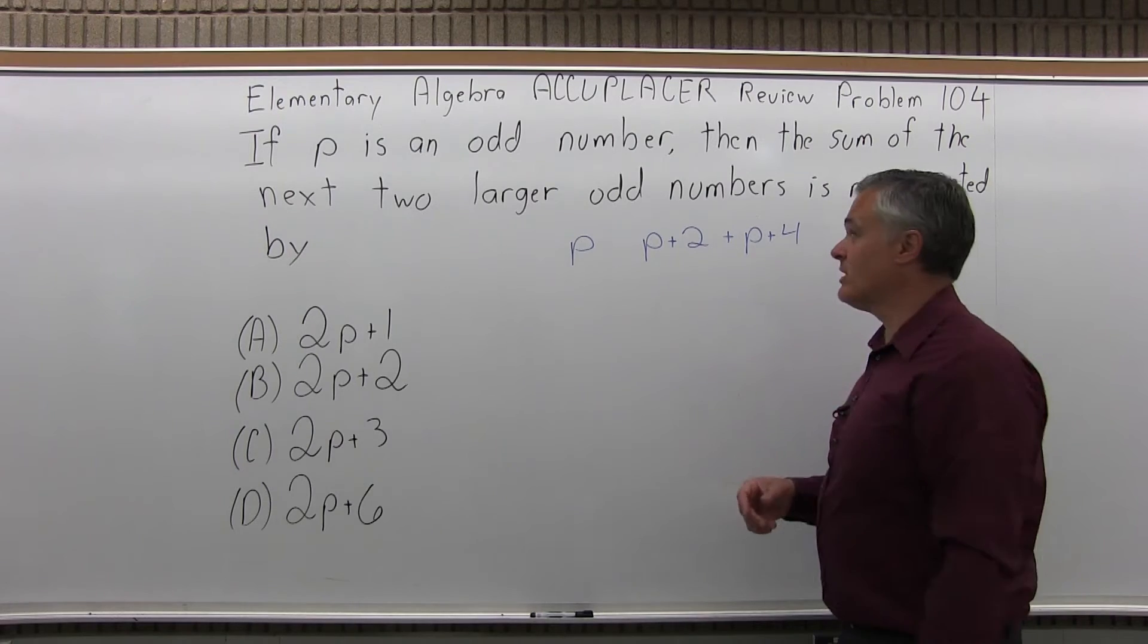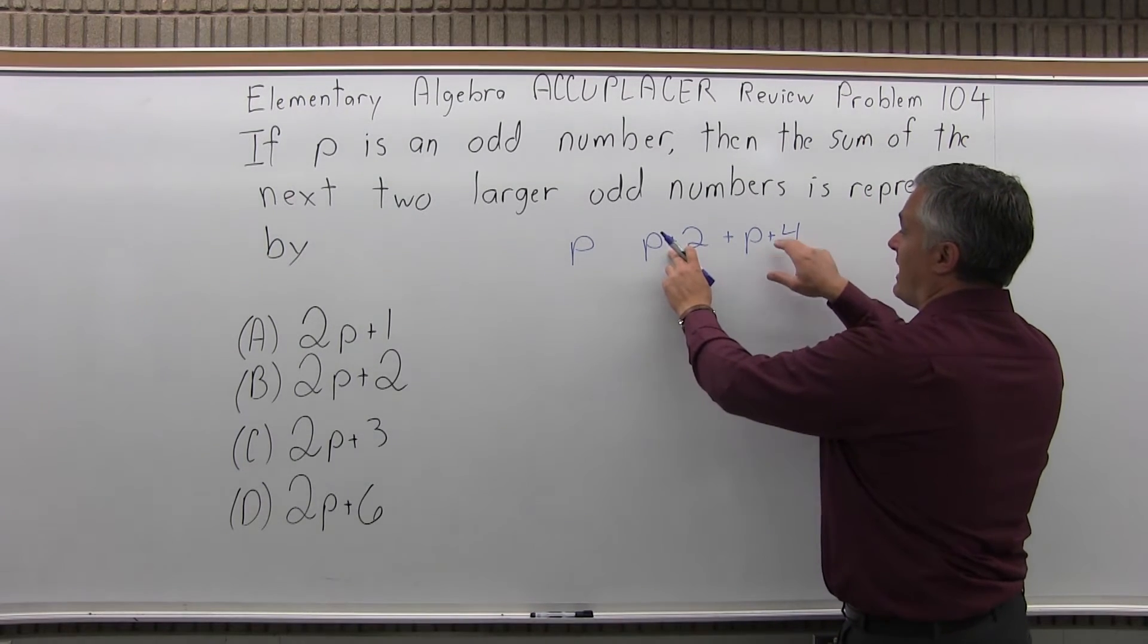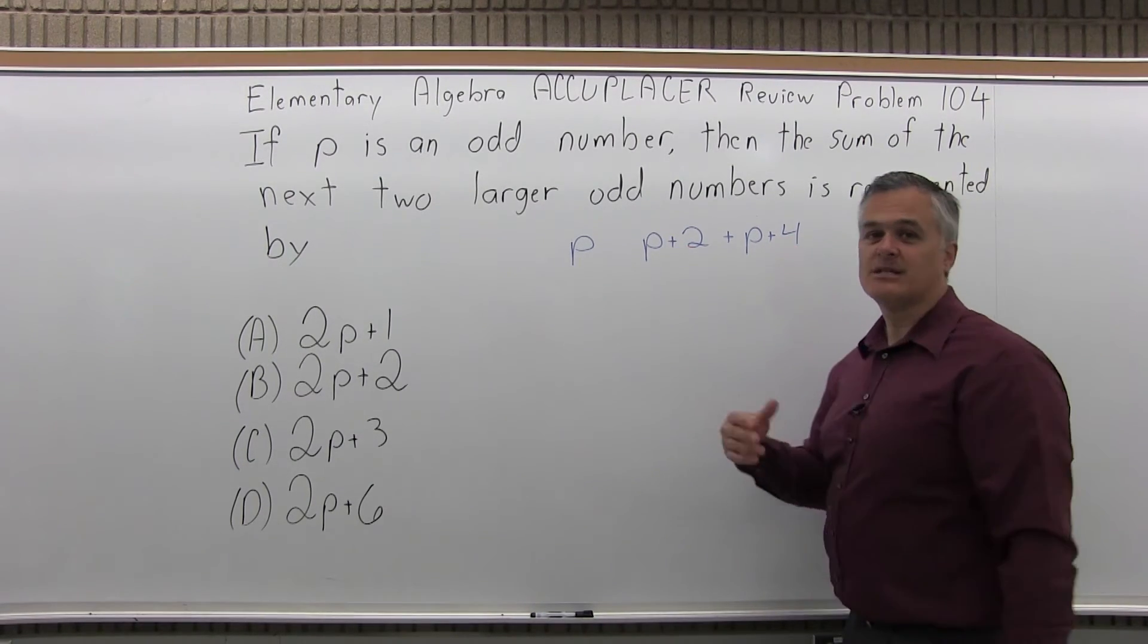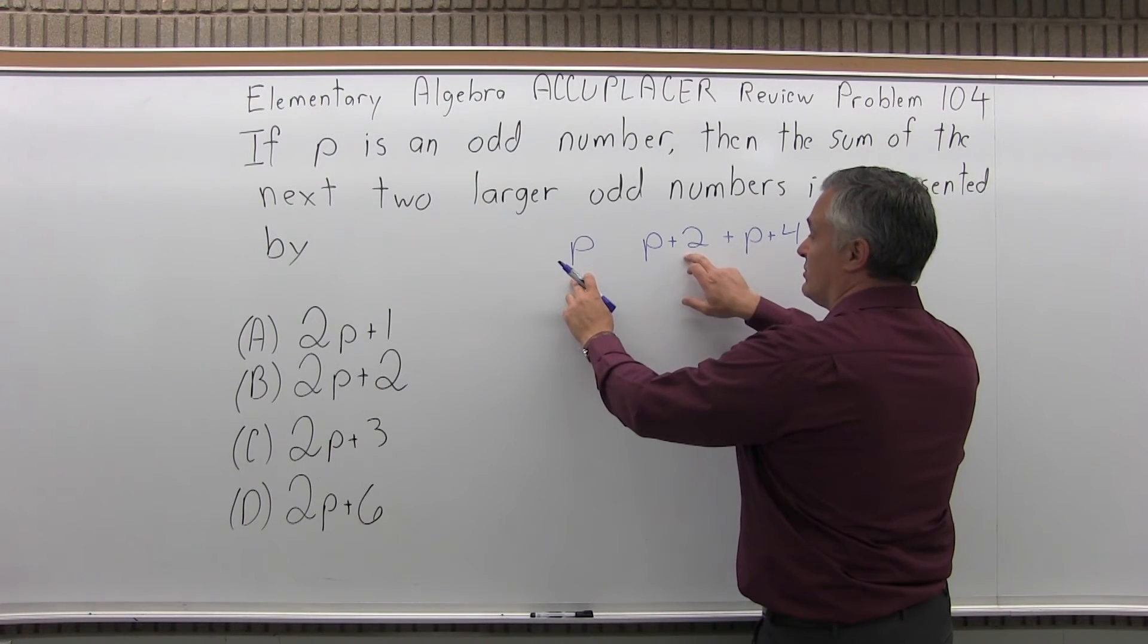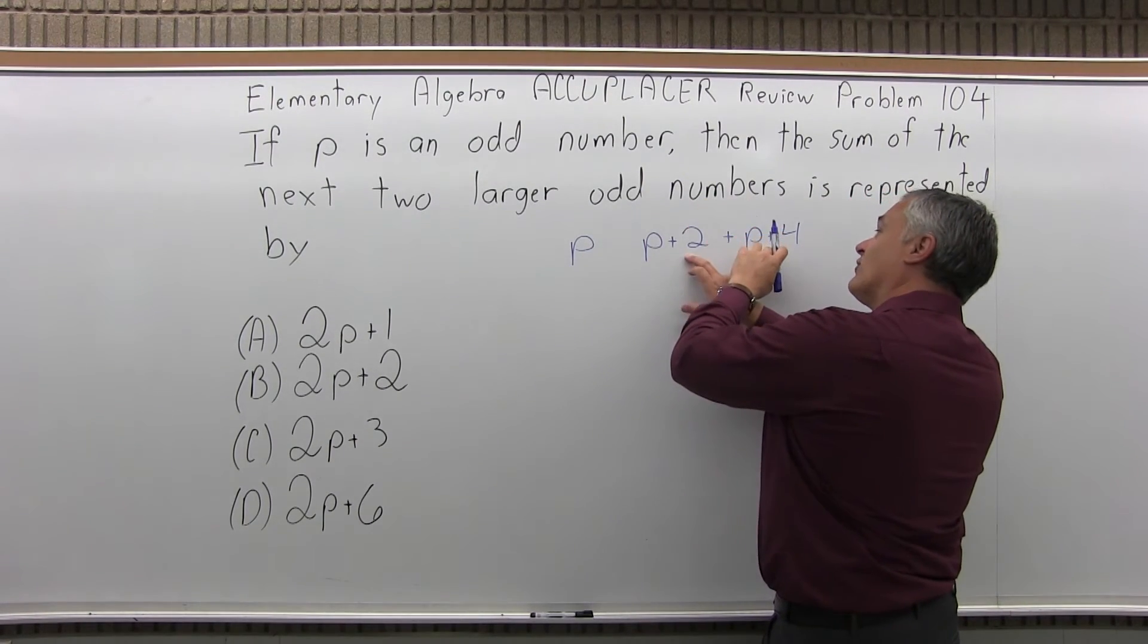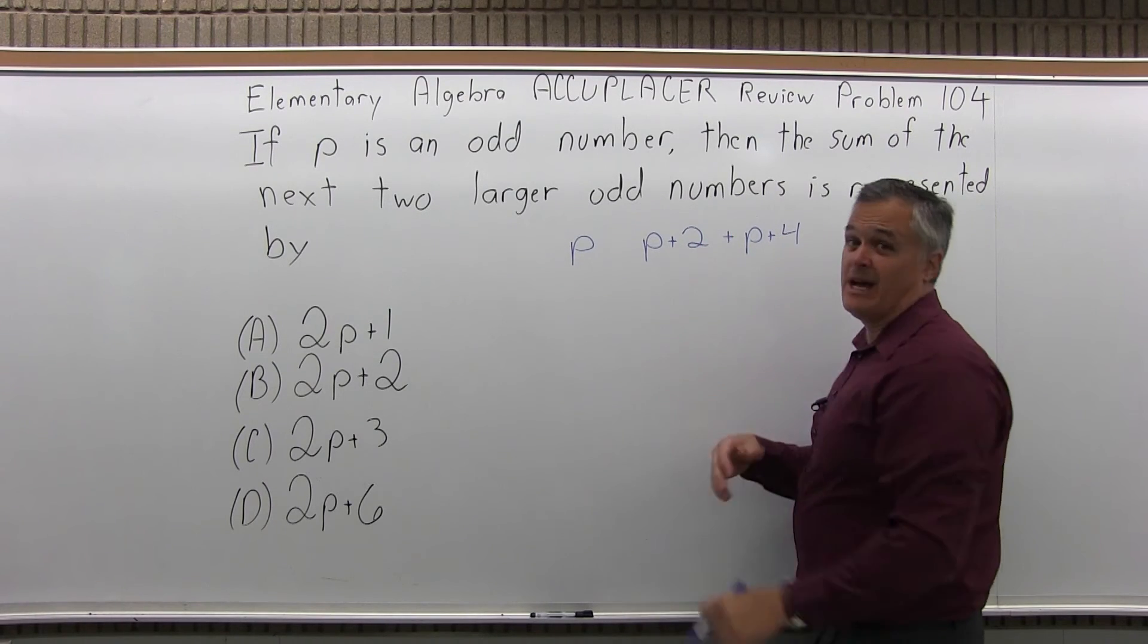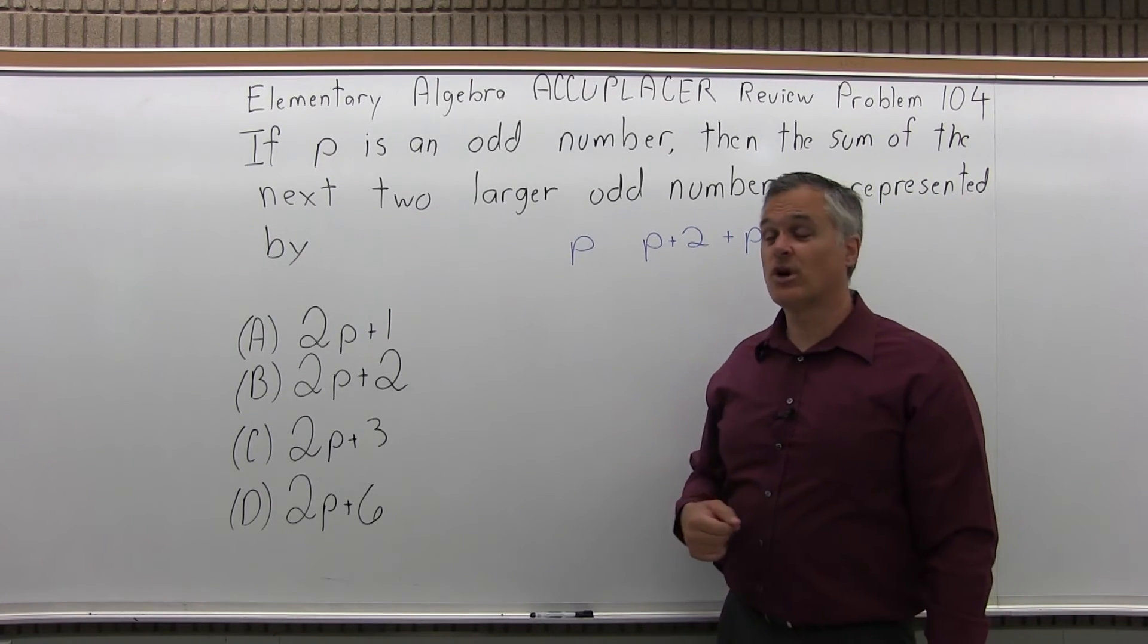My example started with three. You'd have three plus two is five. Three plus four is seven. Say I started with P is 11. Any odd number you want. P is 11, P plus two is 13. P plus four, 11 plus four is 15. That's how you get the next two larger odd numbers.